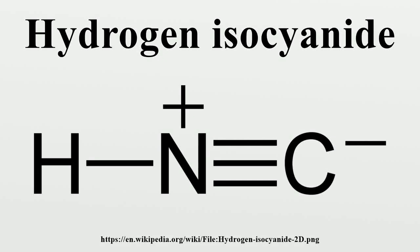Hydrogen isocyanide is a chemical with the molecular formula HNC. It is a minor tautomer of hydrogen cyanide. Its importance in the field of astrochemistry is linked to its ubiquity in the interstellar medium.